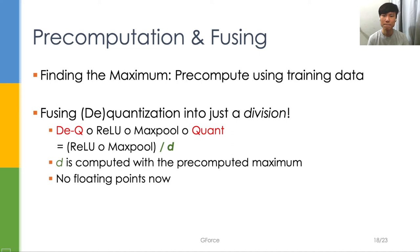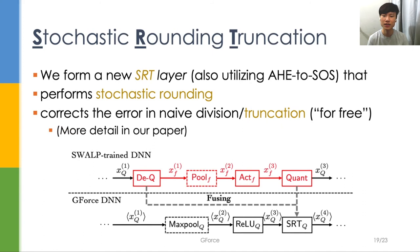With these two ideas, we propose stochastic rounding truncation layers, shorthanded SRT layer. Since the divisor is always a power of 2, we call it truncation. We propose a protocol that can correct the error in naive division while performing stochastic rounding. Even better, this protocol is compatible with our AHE to SOS trick for higher performance.